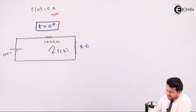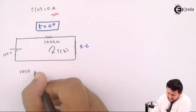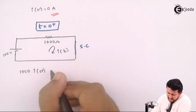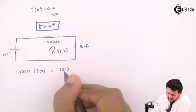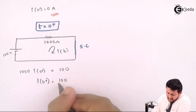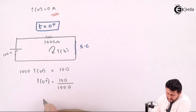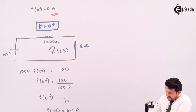Since the circuit is closed, let's apply KVL to get the current. Applying KVL, the equation is: 1000 × I(0+) = 100. So I(0+) = 100 divided by 1000, which gives I(0+) = 0.1 amperes. That is the answer for Case 2.